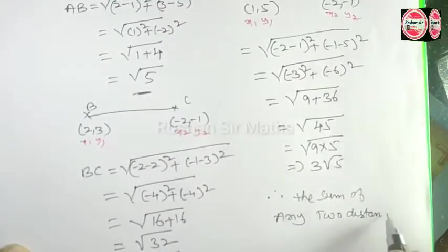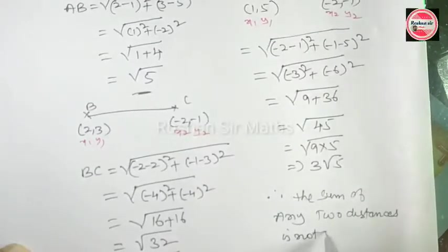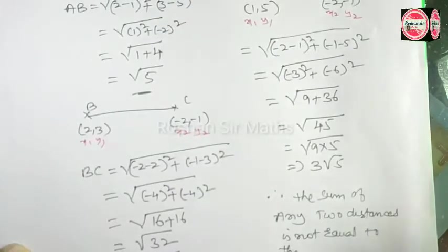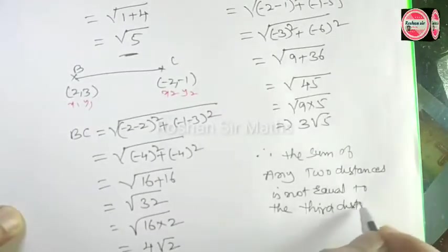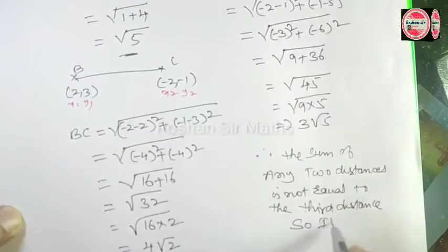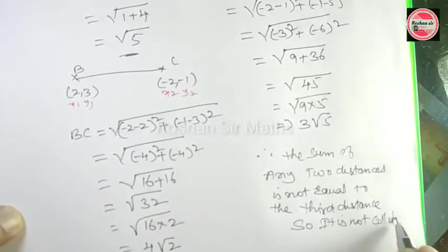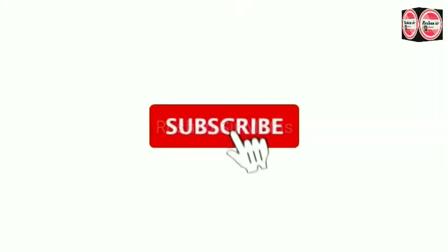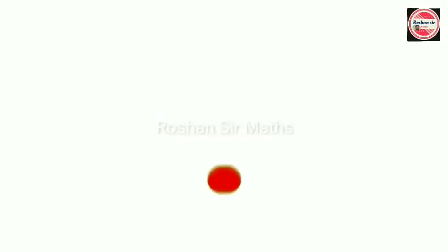The distances are not equal — the sum of two distances does not equal the third distance. Therefore, the points are not collinear. That is the final answer: these points are not collinear. If you have any questions, please leave a comment.